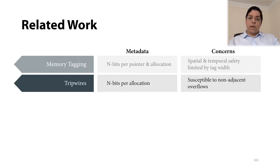On the other hand, tripwire-based solutions like RISTS and Califorms completely avoid the per-pointer metadata, and they embed the per-allocation metadata within program data itself. While those techniques have comparable performance overheads to NoFat, they have lower security coverage as they are susceptible to non-adjacent overflows.